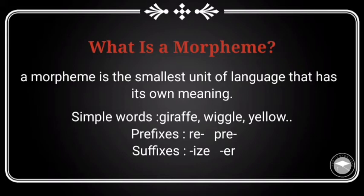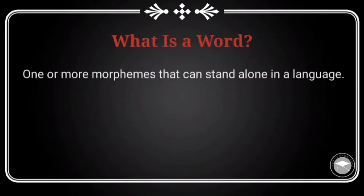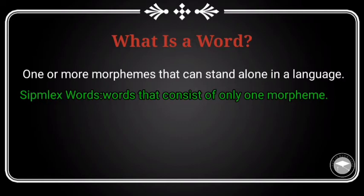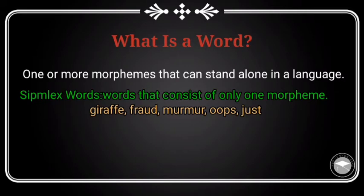And the suffixes '-ize' and '-er' in words like 'modernize' and 'teacher.' Now we can use the term morpheme to help us come up with a more precise definition of word. A word is one or more morphemes that can stand alone in a language. With one morpheme, one can use a simple or simplex word — like 'giraffe,' 'fraud,' 'murmur,' 'oops,' 'just,' and so on.